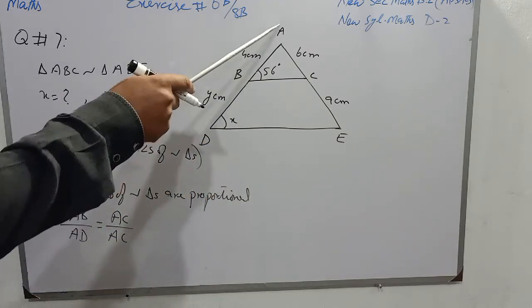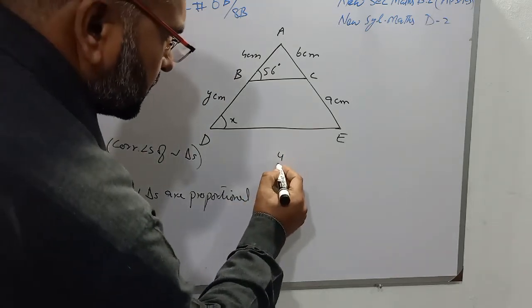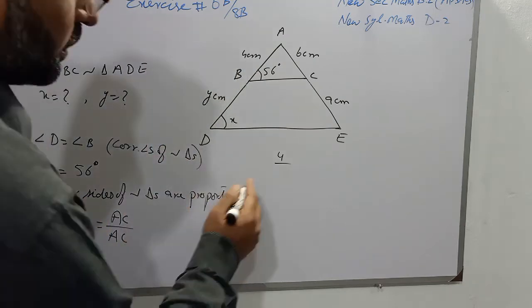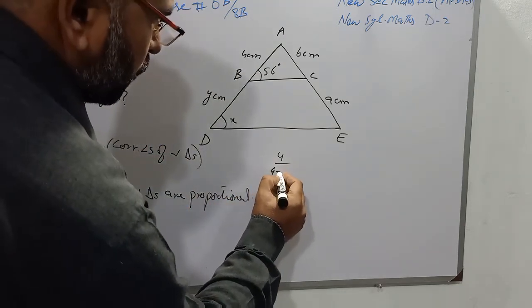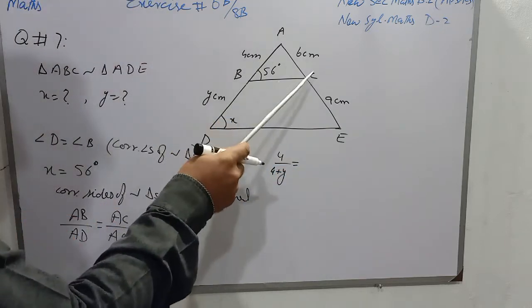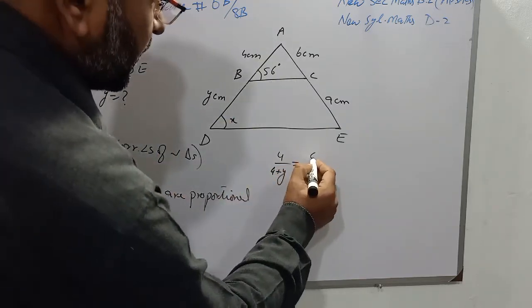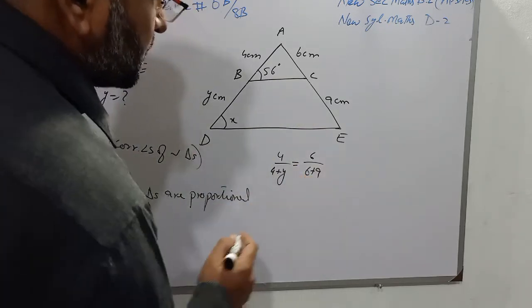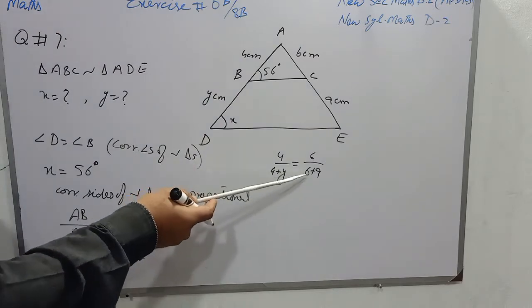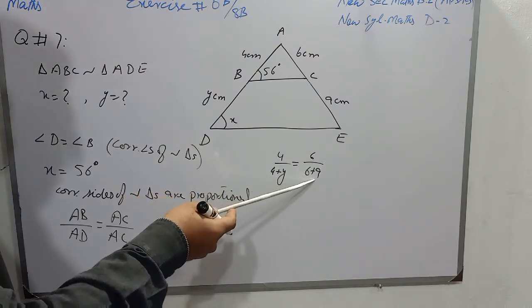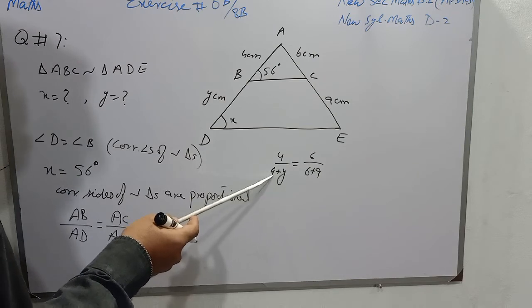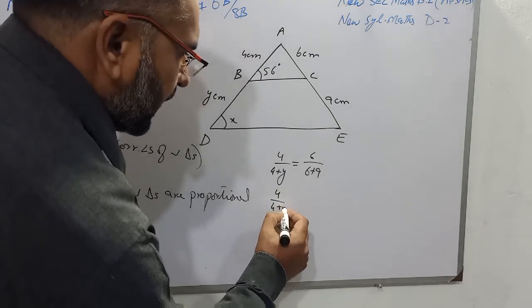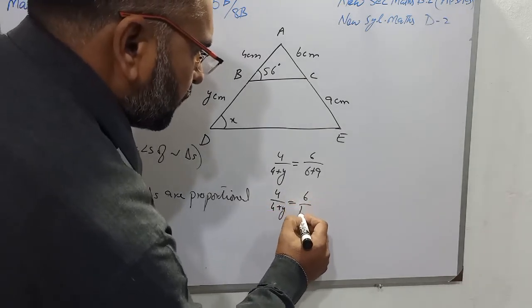In place of AB, the value is 4, so I write 4 over the value of ADE which is 4 plus Y, is equal to AC which is 6, whereas AE is 6 plus 9. We can simplify 6 plus 9 as 15, but we cannot sum up 4 plus Y because both are unlike terms. So it is written as 4 over (4 plus Y) is equal to 6 over 15.